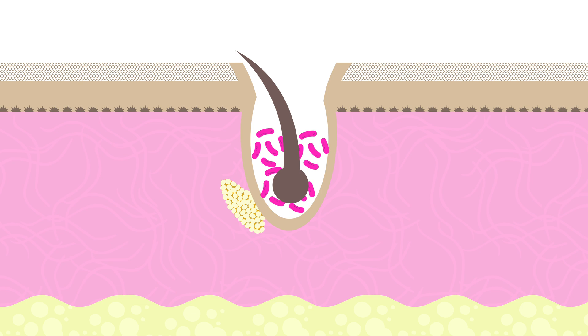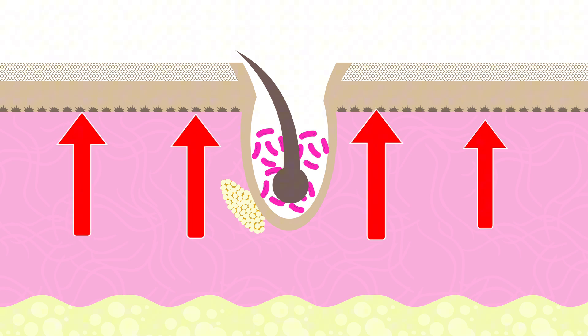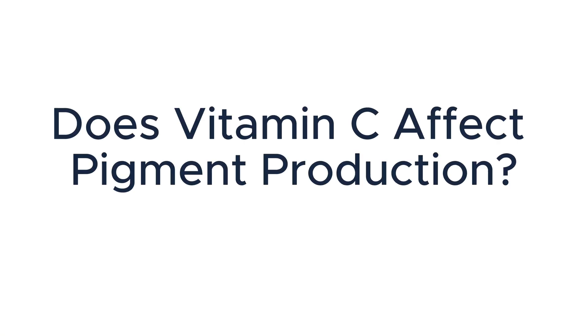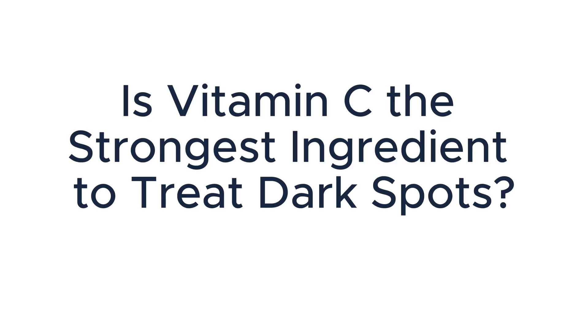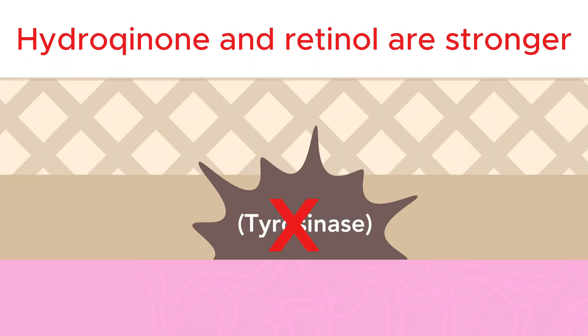Next, pigment. Our pigment is made by our melanocytes, which are these brown cells that live at the very bottom of the epidermis. Does vitamin C affect our pigment production? Yes. It stops the most important enzyme needed to make pigment. Is vitamin C the strongest ingredient? No. It's not the best ingredient for this purpose.